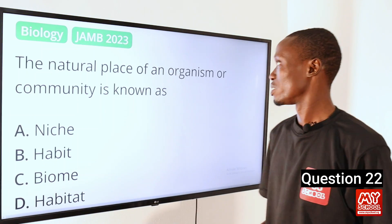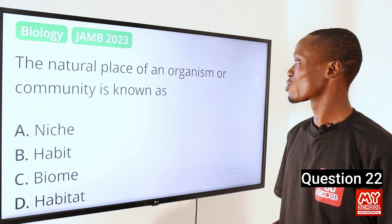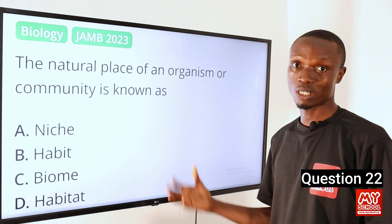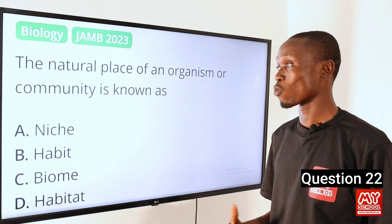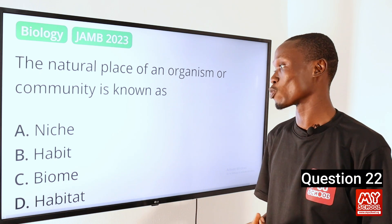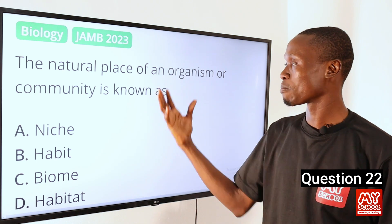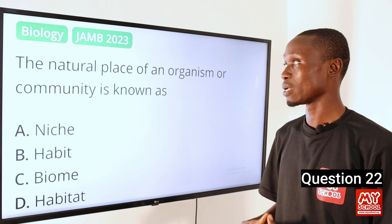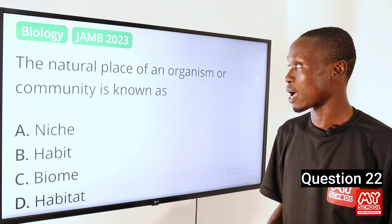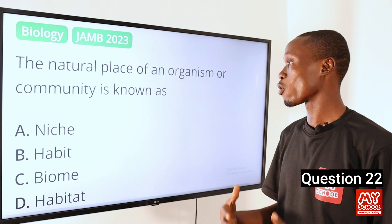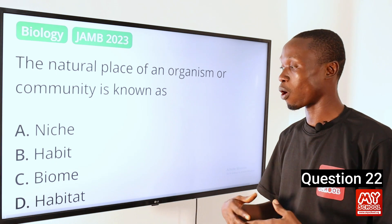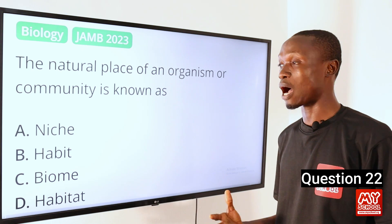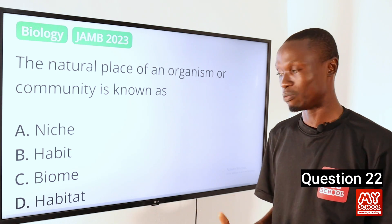Question 22. The natural place of an organism or community is known as — this is a very simple question which I believe everybody should be able to answer. The answer to this question is option D: habitat. Habitat is referred to as the natural place of an organism or community, or you can say it is the natural environment where an organism lives.